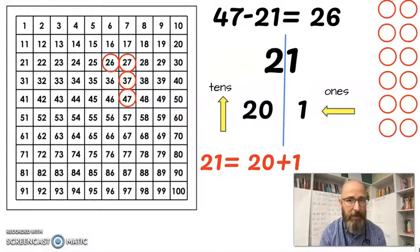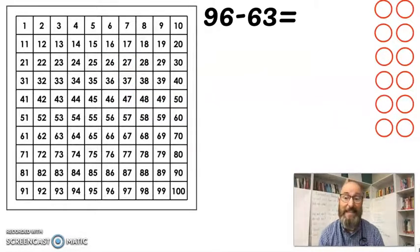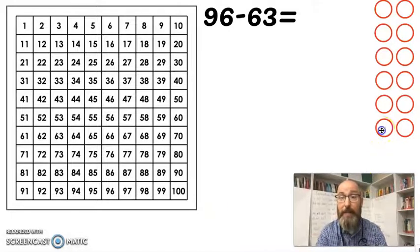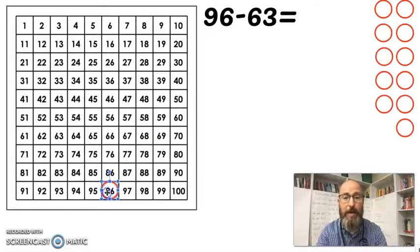Now you might be thinking to yourself I'm not so sure yet. Let's do another one together. 96 minus 63. These are bigger numbers. Is this going to work here? Absolutely it is. So let's start with our first number. We have our first number 96 and we're going to find it on our hundreds chart. We're going to go ahead and pick it.